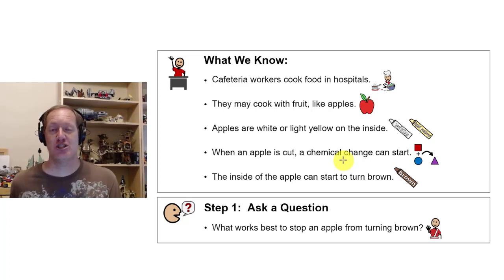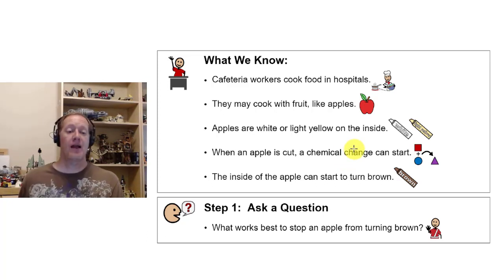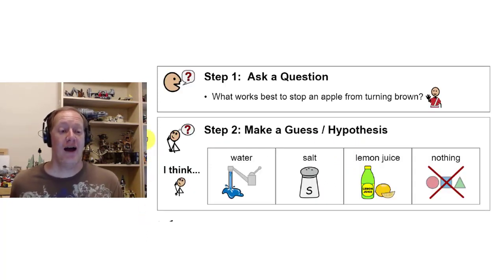A physical change just changes what it looks like. So if you have a glass jar and you drop it on the ground, that is a physical change. It did not change chemically. If you wanted to, you could put that glass jar back together again because you have all the pieces. The pieces did not change in a chemical way, just in a physical way.